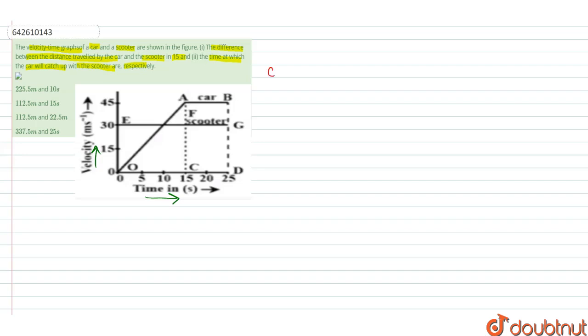For the car, we can see we have this triangle because we are concerned with 15 seconds. So we find the displacement of the car as S₁ equals half into base into height. Base is 15, height is 45. So we get the value as 337.5 meters. This is the value of S₁.